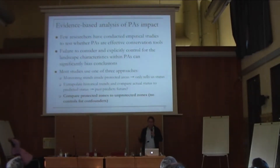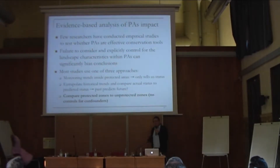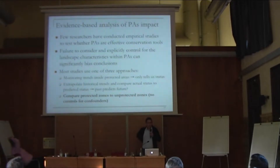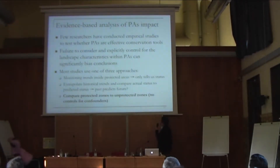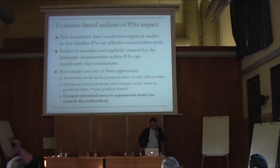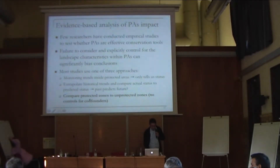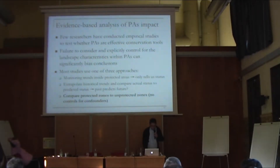Looking at previous evidence-based analyses of protected areas, very few researchers — probably less than five around the world — have conducted rigorous empirical studies to test the effectiveness of these instruments. Most of the studies, besides those five doing it correctly, fail to consider an explicit control for the landscape characteristics that determine land-use dynamics, and actually fail to control for selection bias in the establishment of protection. Most papers that compare protected zones to unprotected zones and find a difference rapidly assign that difference to protection.